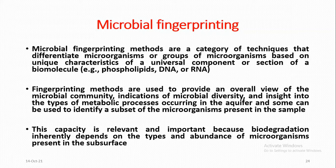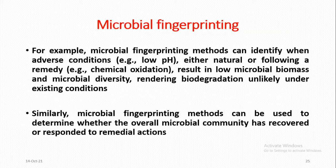This capacity is important because biodegradation inherently depends on the types and abundance of microorganisms present in the subsurface. For example, microbial fingerprinting methods can identify when adverse conditions like low pH — either natural or following a remedy such as chemical oxidation — result in low microbial biomass and microbial diversity, rendering biodegradation unlikely. Similarly, microbial fingerprinting methods can determine whether the overall microbial community has recovered or responded to remedial actions.